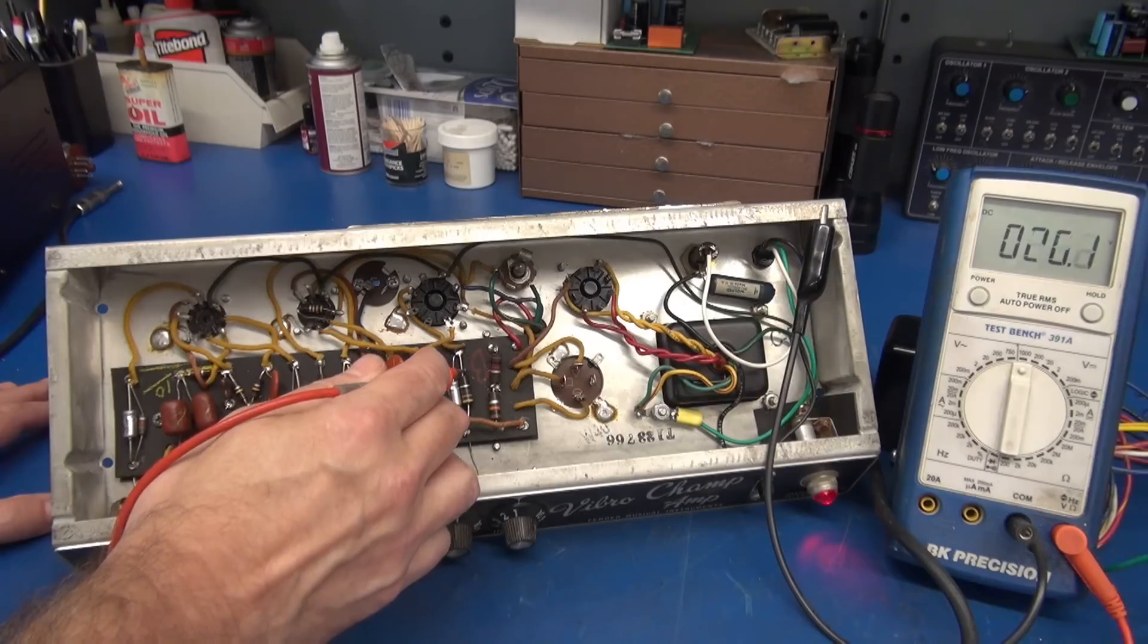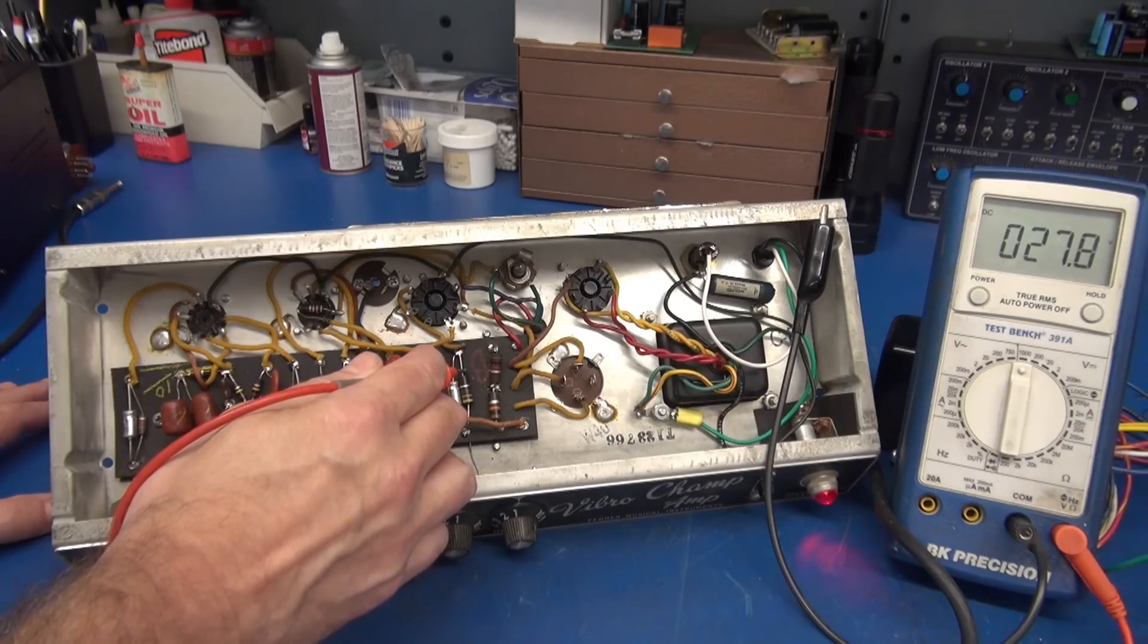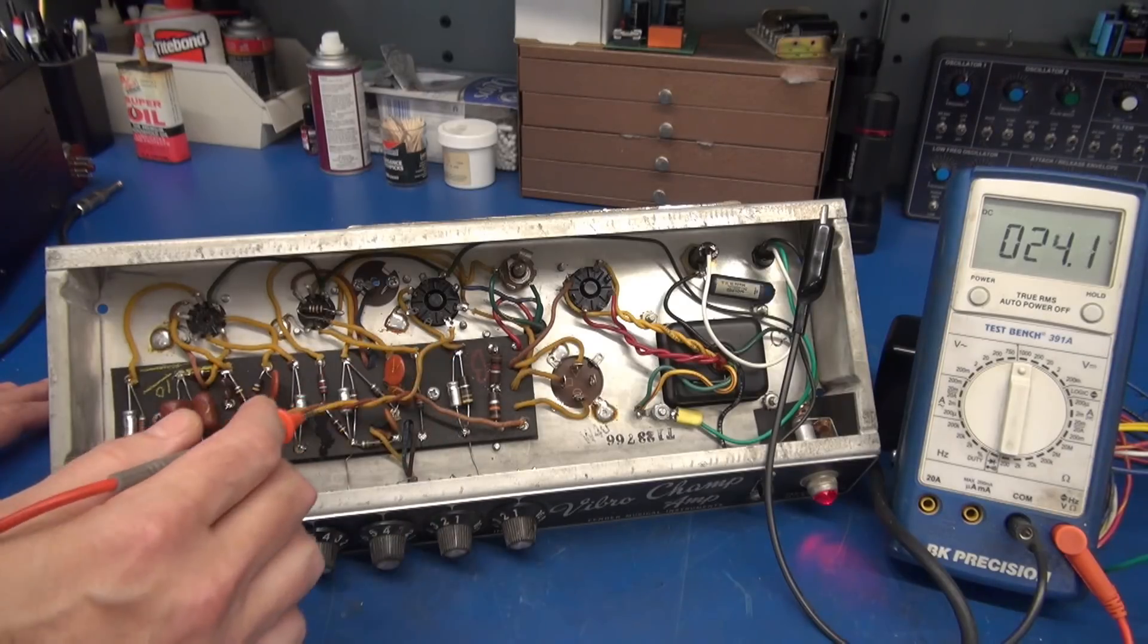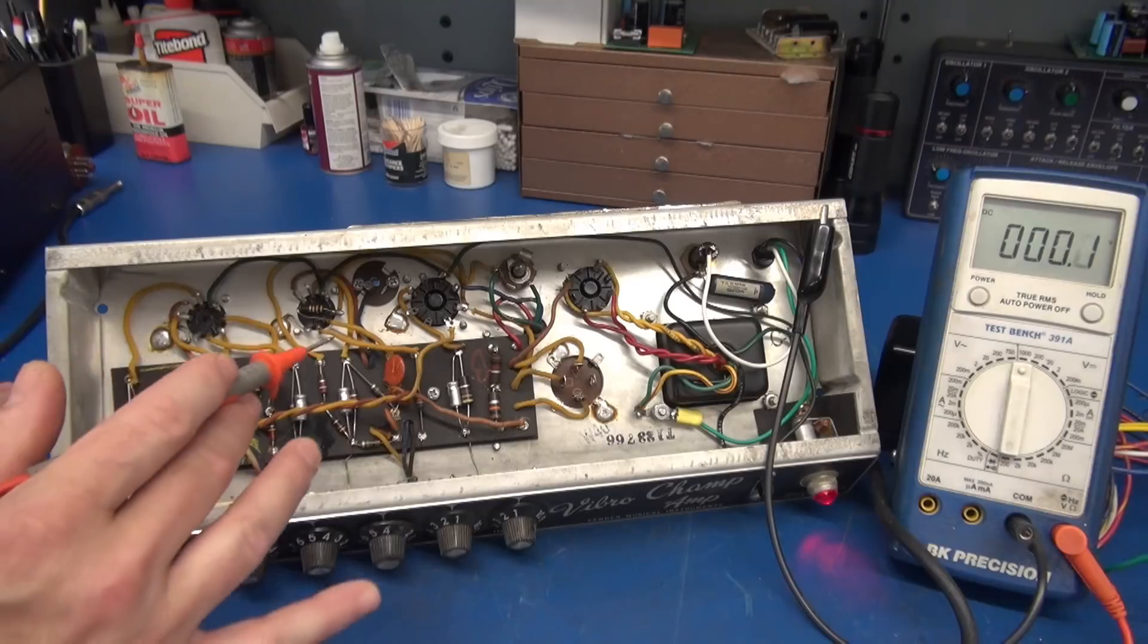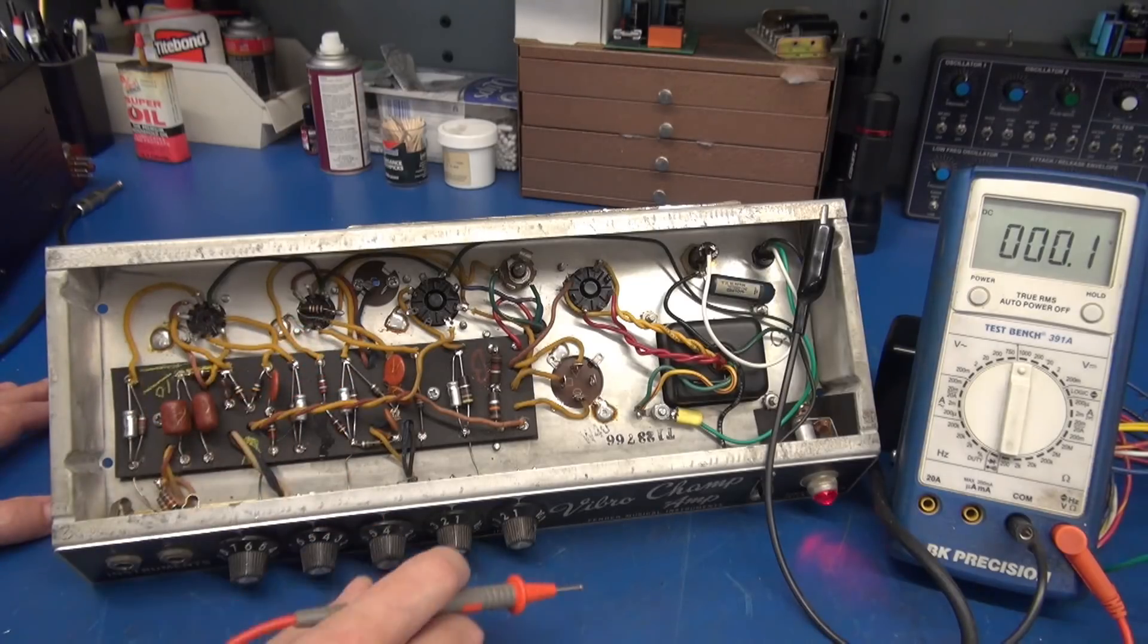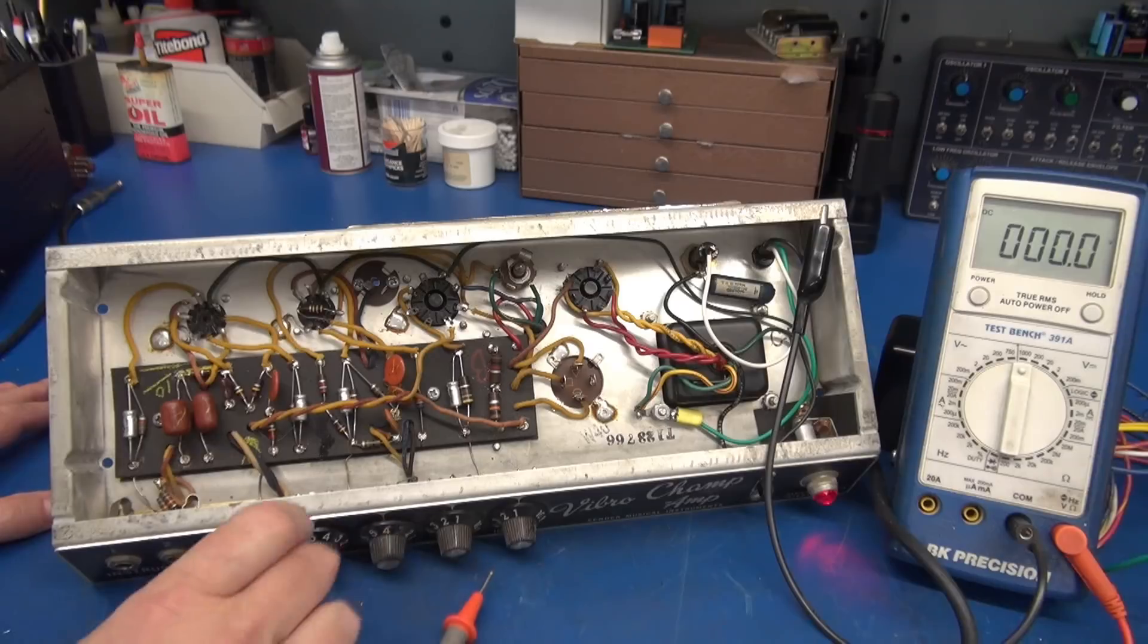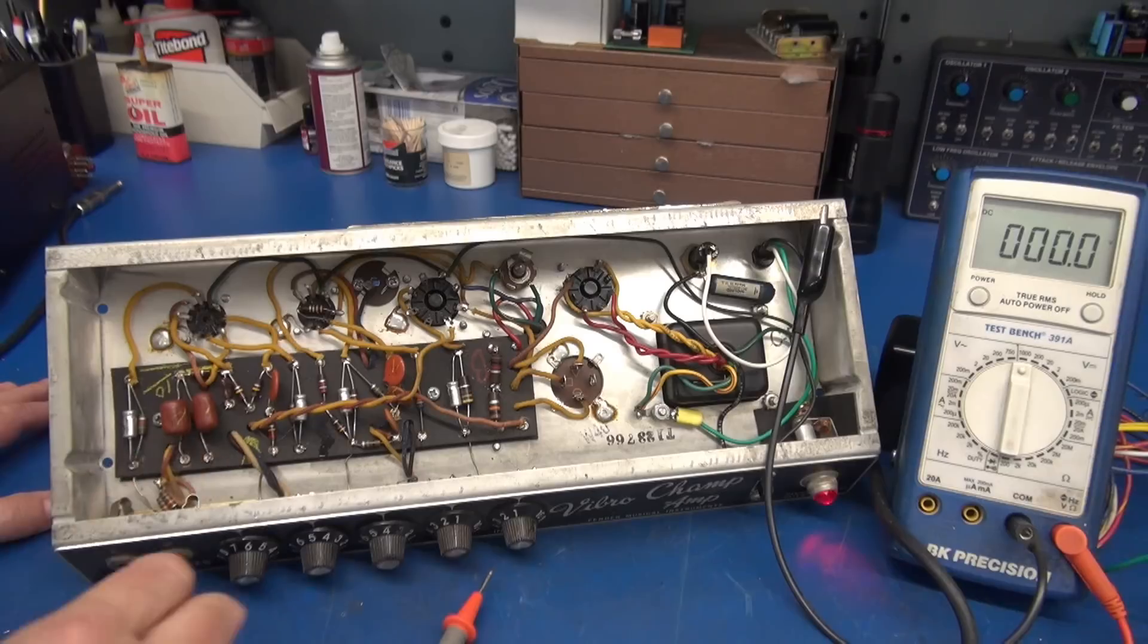How about the 6V6? We're just going to check the cathode voltage only to see if the bias resistor is doing his thing and it is. So it appears as though the voltages are present.